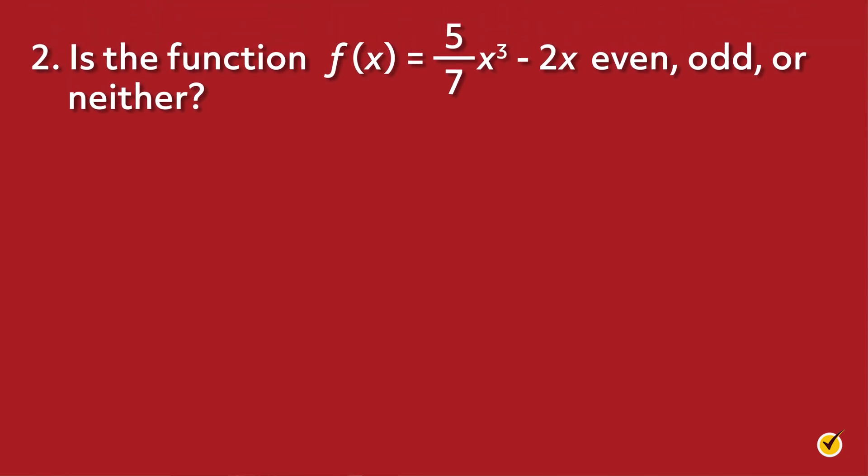Let's try another one. Is the function f(x) equals five-sevenths x cubed minus 2x even, odd, or neither? Let's look at each term. First, five-sevenths x cubed has an odd power of x, meaning that the sign will change when evaluated at negative x. Similarly, the second term, negative 2x, has an odd power of x and will also change sign. That means this function is odd.